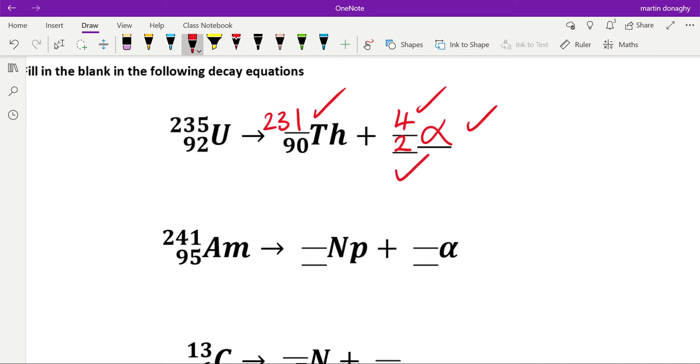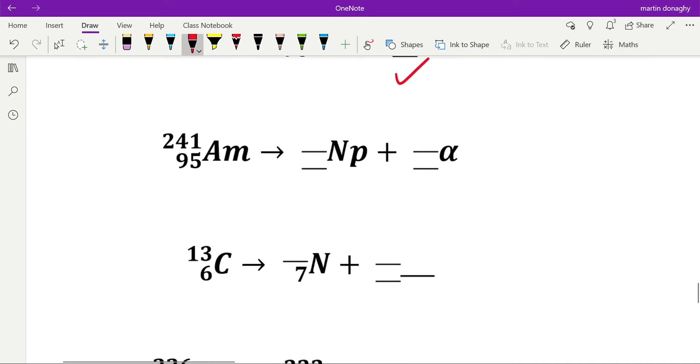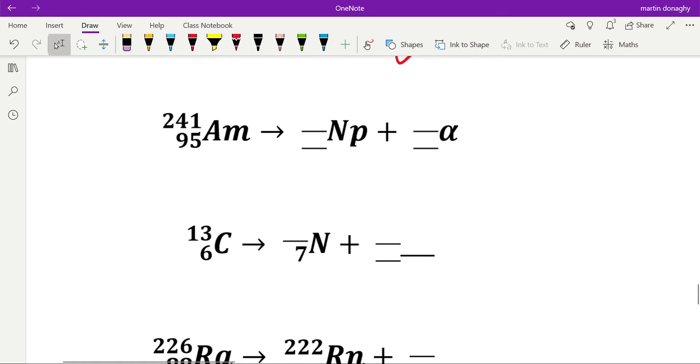Next one, americium. It tells you that it's emitting an alpha particle, so we know that this needs to be 2, 4. Like I said, you need to learn that. Then we can just add it up across the arrow: 95 equals 93 plus 2, and 241 equals 237 plus 4. Which means because the atomic number is 93, this has to be neptunium.